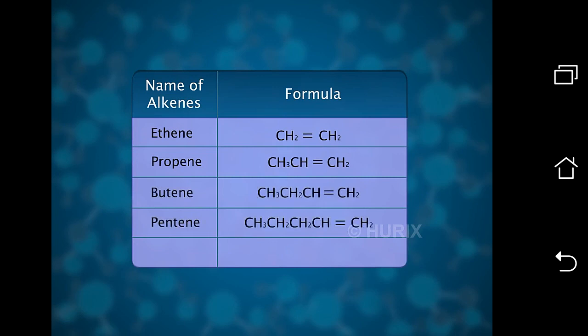In alkenes, the chemical properties depend on the carbon-carbon double bond present in the carbon chain.